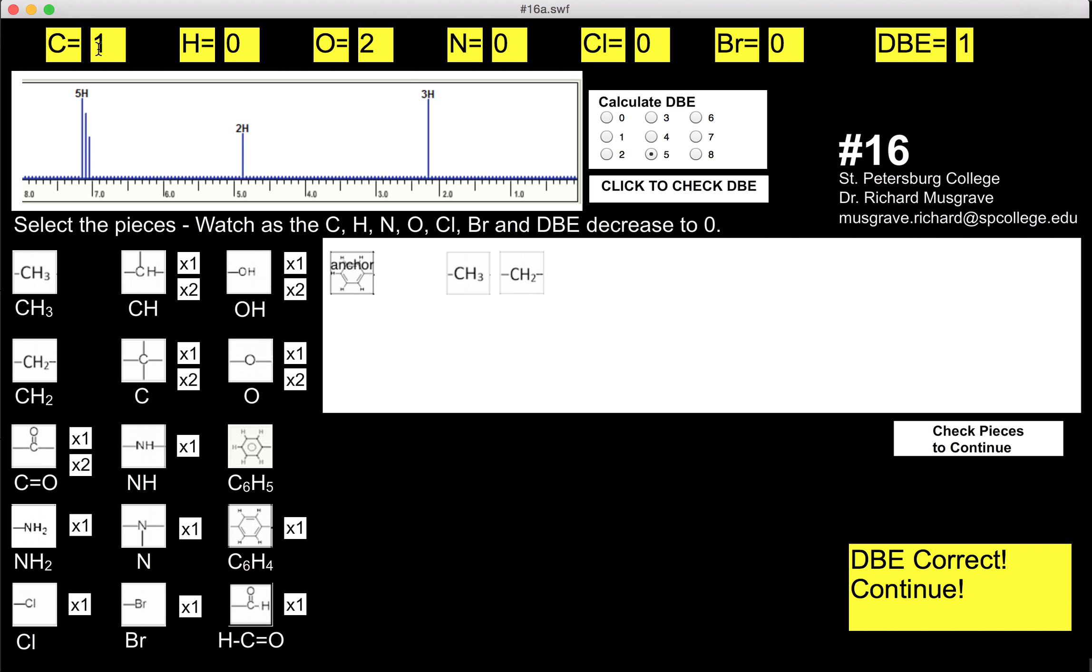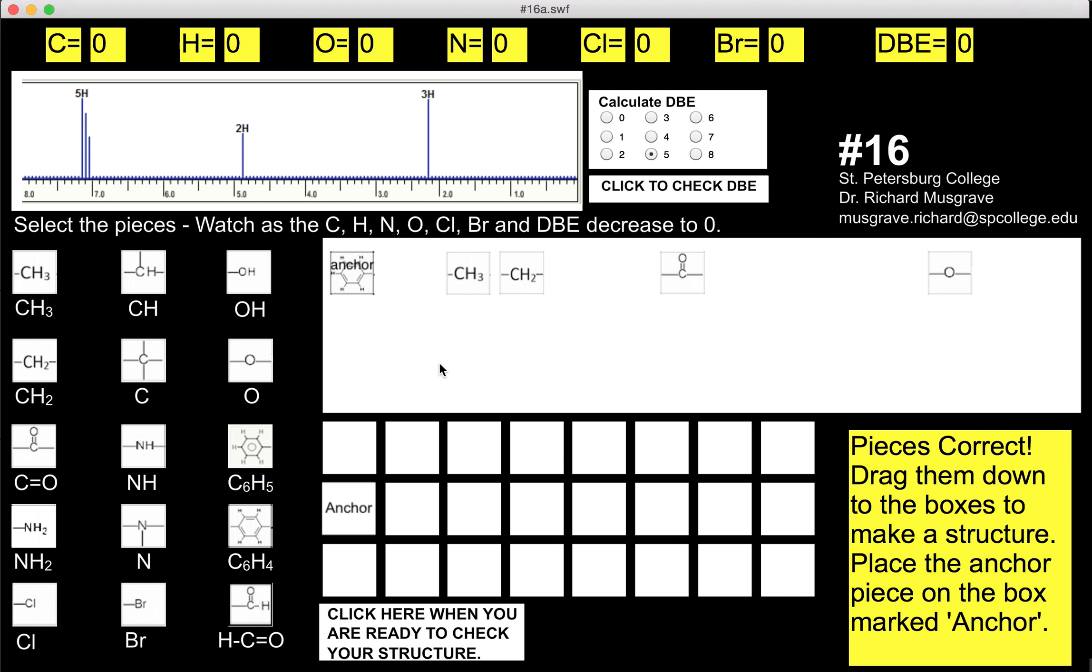The pieces left over, we've got a C, we have two O's and a double bond equivalent. That would suggest a C double bond O and an oxygen. Everything counts down to zero. That should be the pieces. Now we need to put them together.